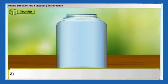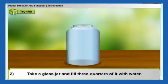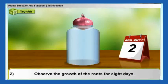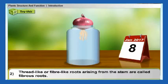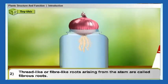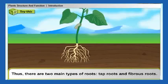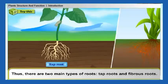Activity two: take a glass jar and fill three-quarters of it with water. Place an onion on the mouth of the jar so that its roots are towards the water. Observe the growth of the roots for eight days. Thread-like or fiber-like roots arising from the stem are called fibrous roots. Thus, there are two main types of roots: tap roots and fibrous roots.